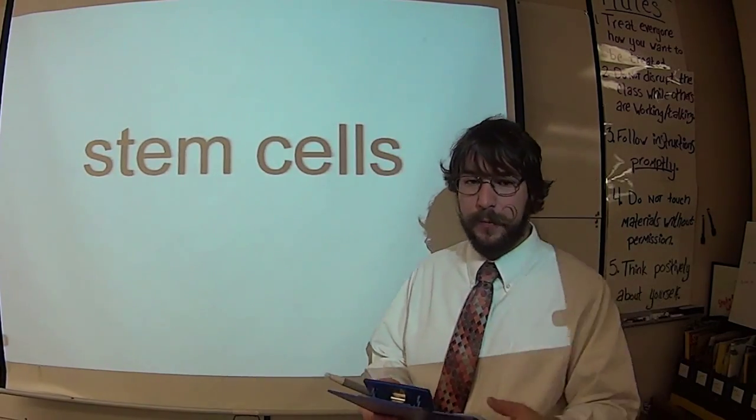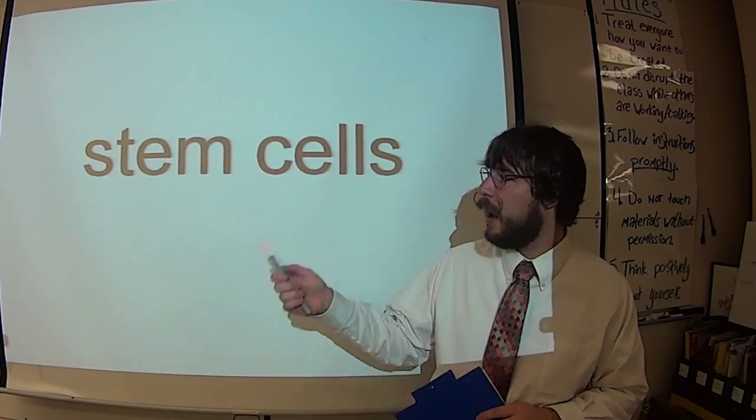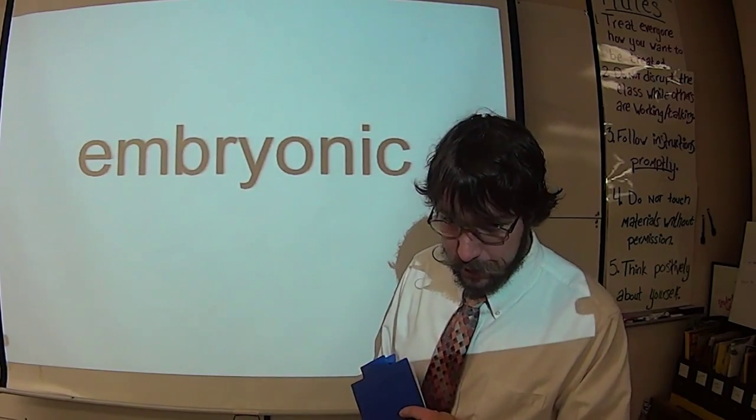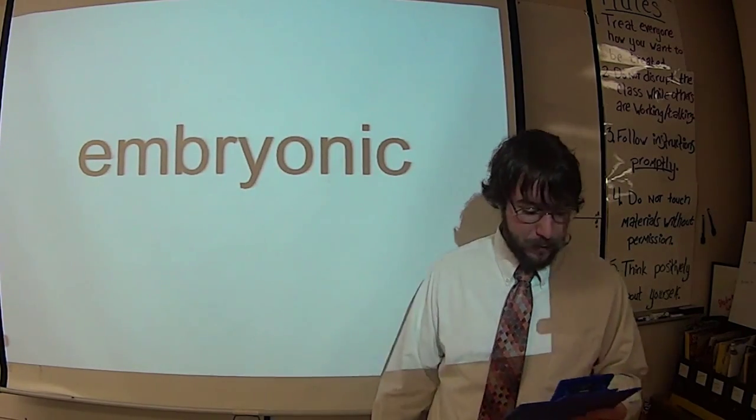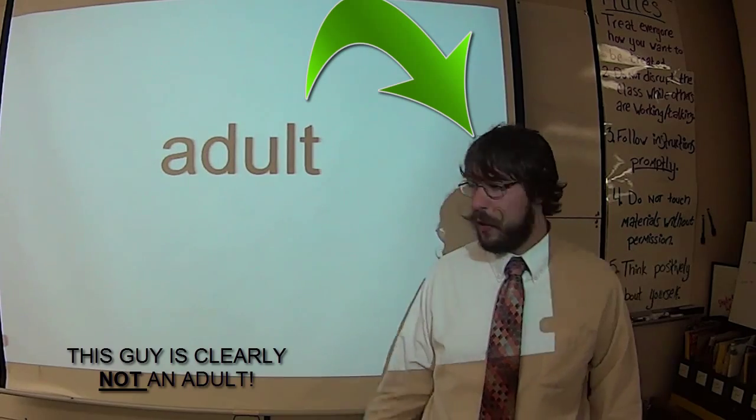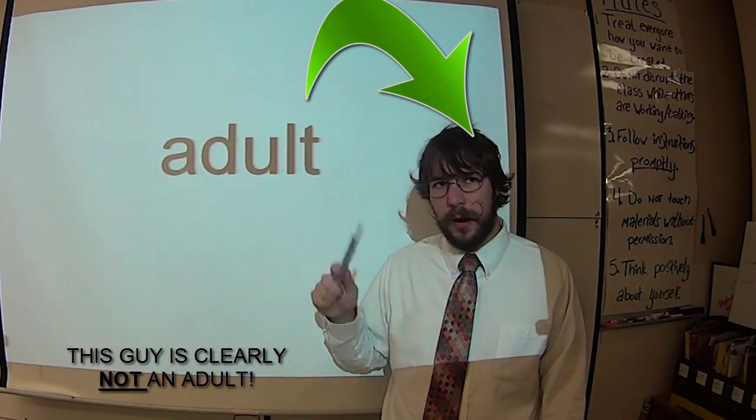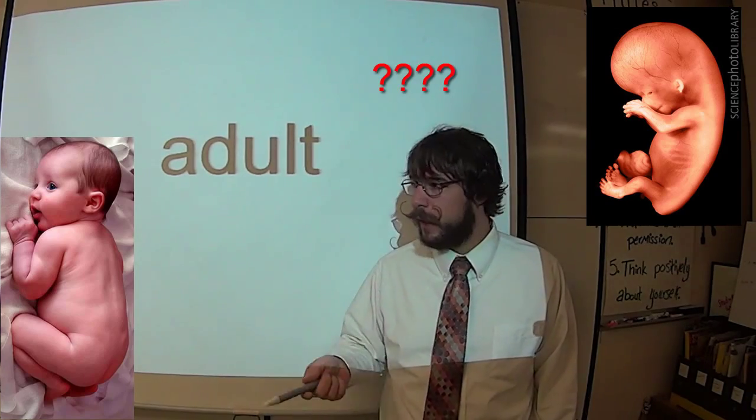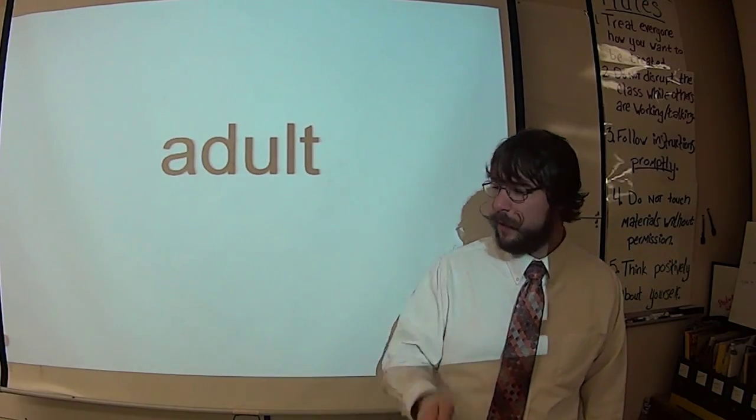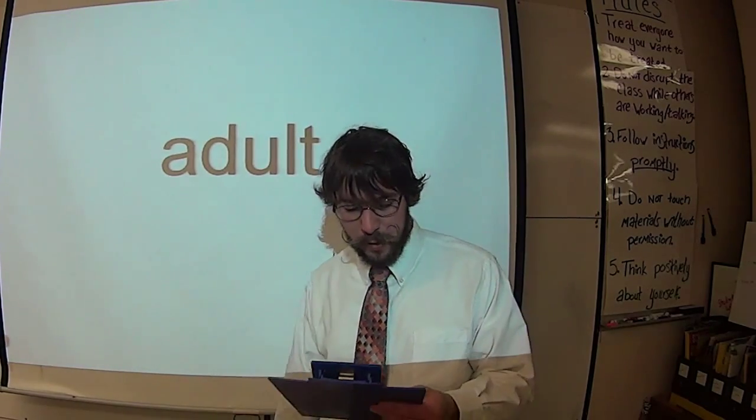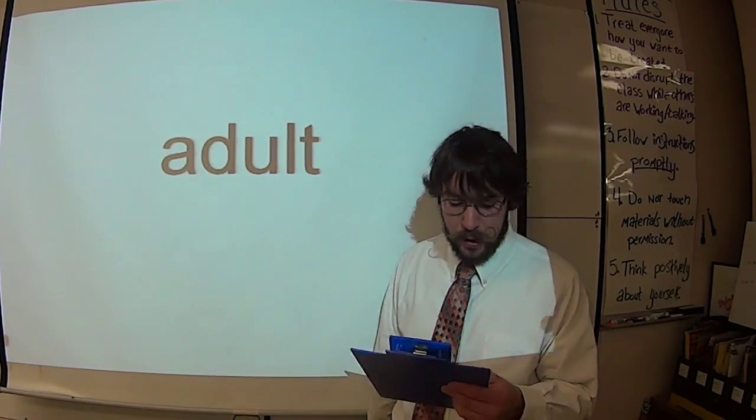will determine what type of cells the stem cells will differentiate into. There are two main types of stem cells. I'll give you these ones. There are embryonic stem cells found in the embryo. And there are also adult stem cells which are found in adults, but also found in babies and fetuses. So it's confusing. Embryonic stem cells only found in embryos. Adult stem cells found way, way before you're an adult,